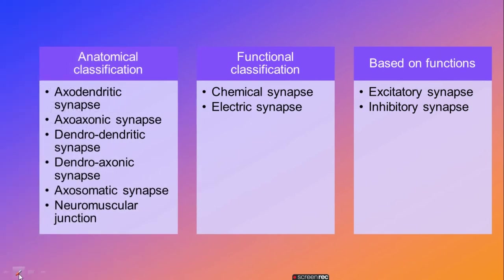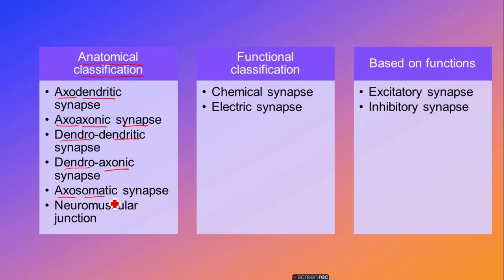You will find several categories listed. The anatomical classification includes: axodendritic synapse, axo-axonic synapse, dendro-dendritic synapse, dendro-axonic synapse, axosomatic synapse, and the neuromuscular junction. The functional classification includes chemical synapse and electrical synapse. Although the terms seem difficult, when you learn about them it will become easier.